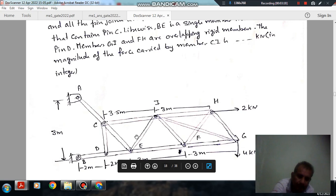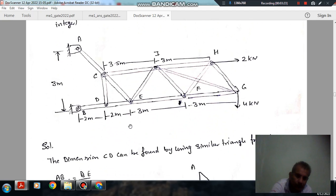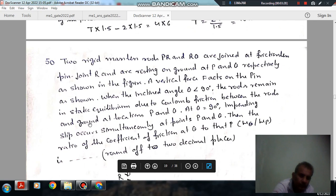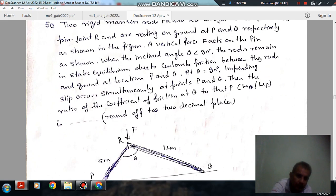Next, two rigid massless rods PR and RQ are joined at a frictionless pin joint R and are resting on ground at P and Q respectively as shown in the figure. A vertical force F on the pin is shown.